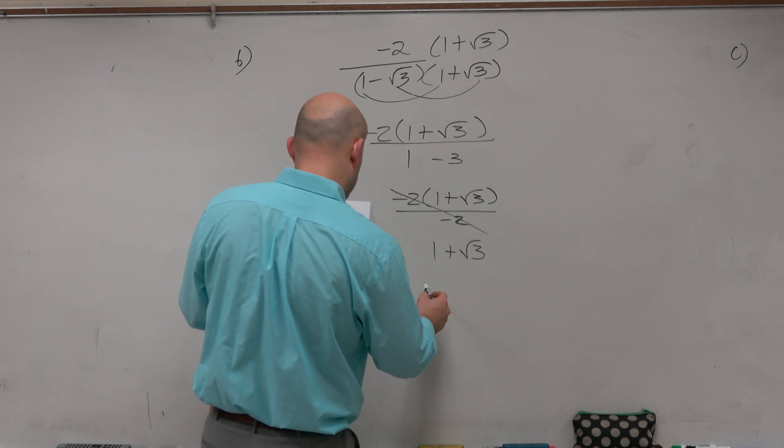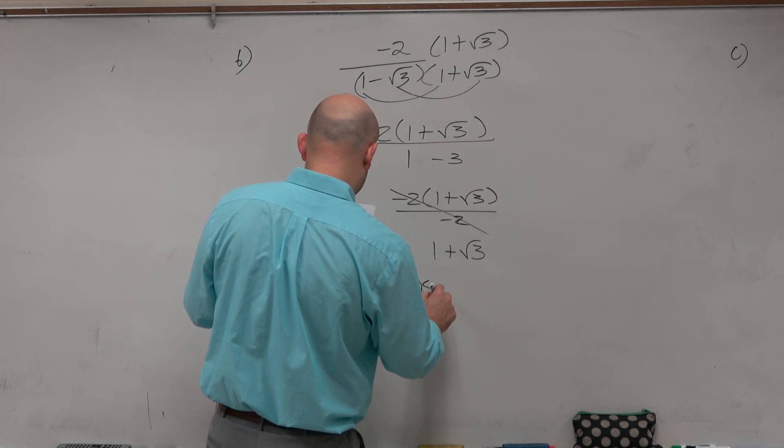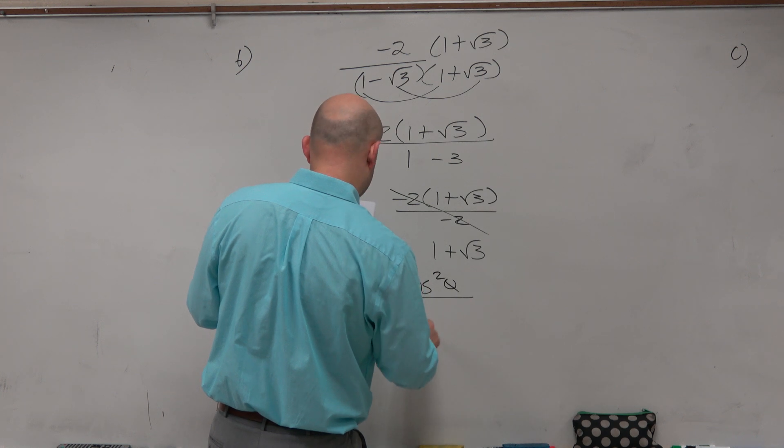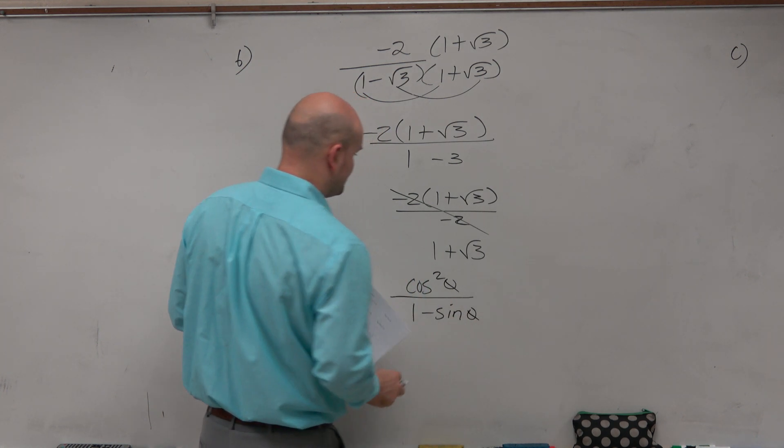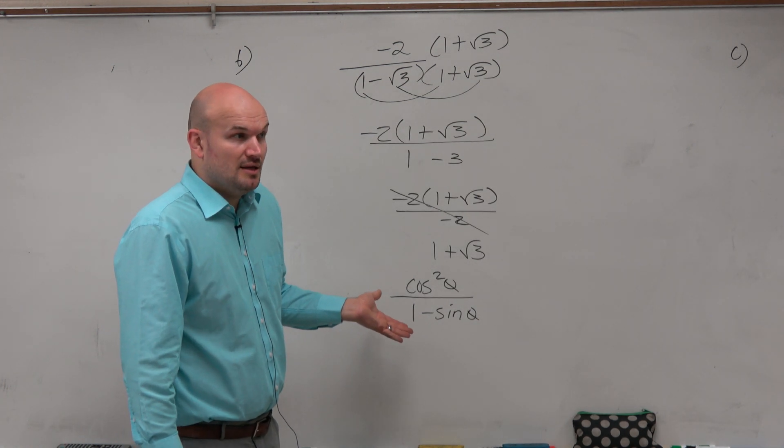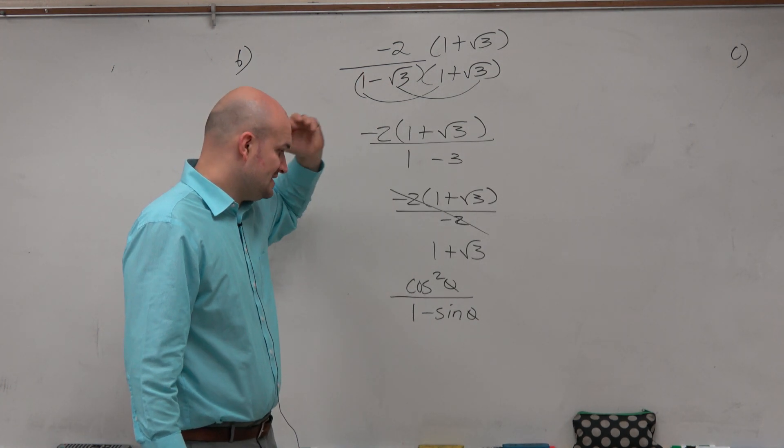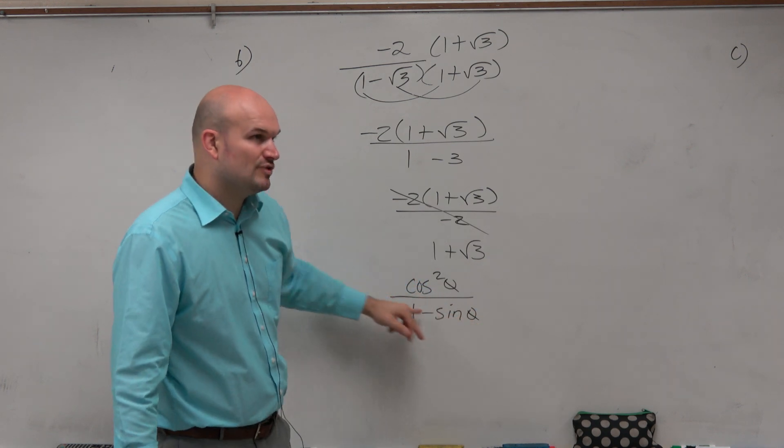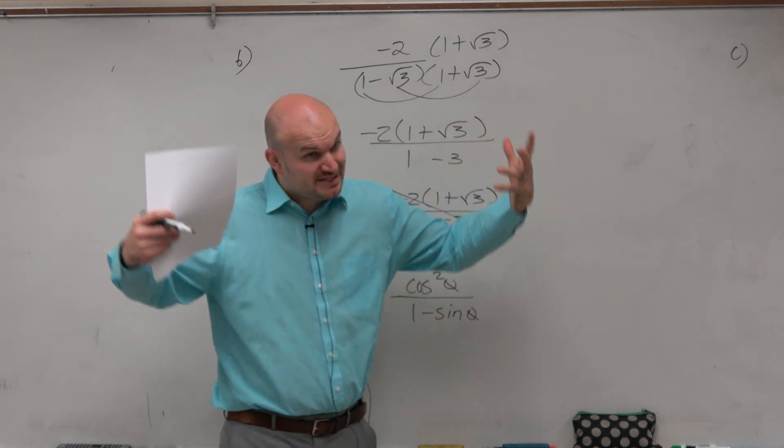So the problem that I actually wanted you to do was cosine squared of theta divided by 1 minus sine of theta. Now, there's really not much we can do here. But again, understanding this idea, if we want to get rid of a fraction, we want this to be simplified.